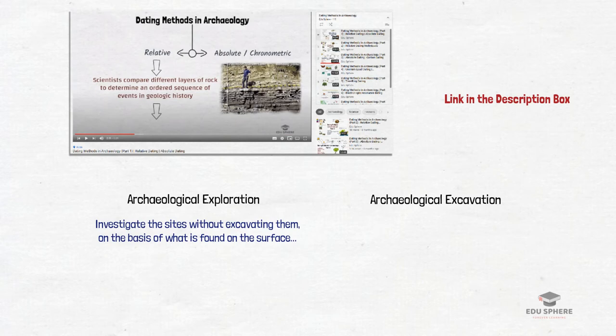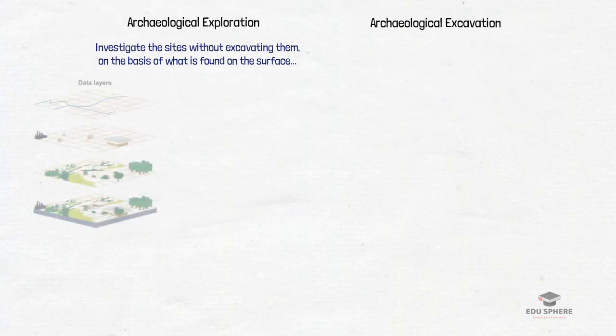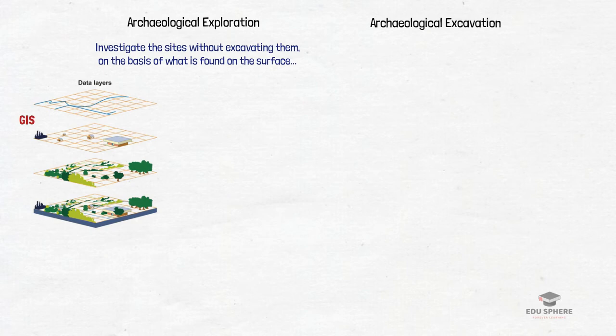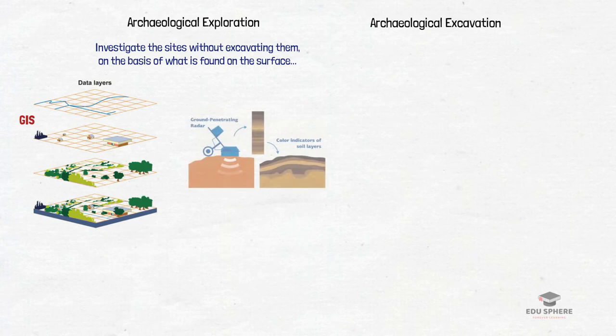For this, they use different methods. Earlier, sites were identified through aerial surveys using aeroplanes by locating high mounds, crop patterns, circles, etc. Now, with the advancement of latest techniques, this is done through satellite images and geographical information systems. Modern techniques such as ground-penetrating radar, electric resistivity survey, and magnetometry are used, which help in knowing buried structures or features without excavating the site.